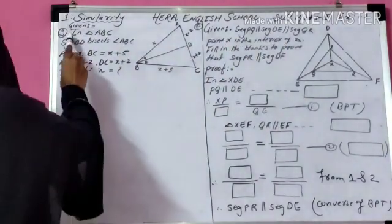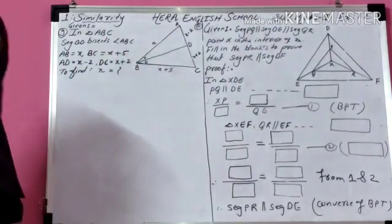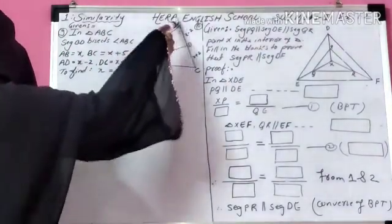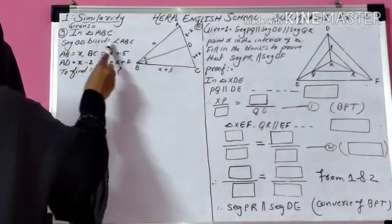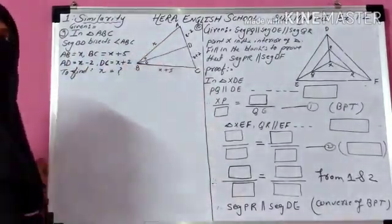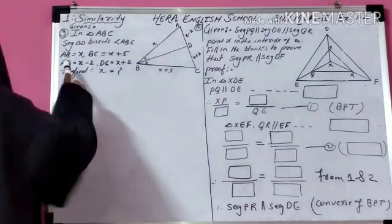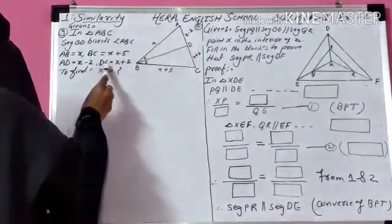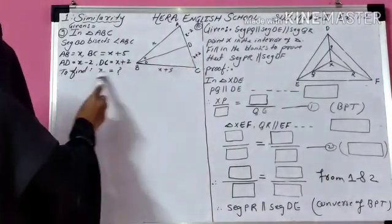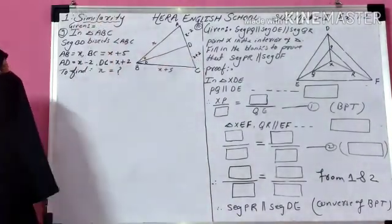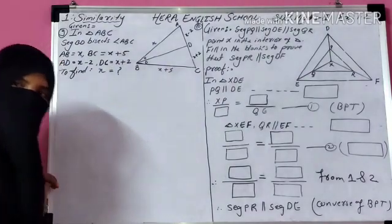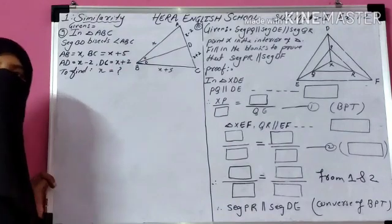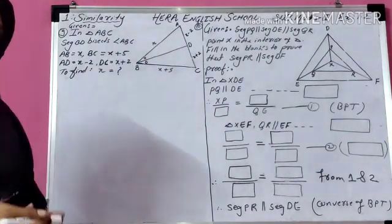Question number 9: in triangle ABC, segment BD bisects angle ABC — that means BD is the bisector of angle ABC. Here, AD value is given as X minus 2, BC value is given as X plus 2. You have to find the value of X, that means AB. In a triangle, if the angle bisector is given, then you directly apply the angle bisector theorem.